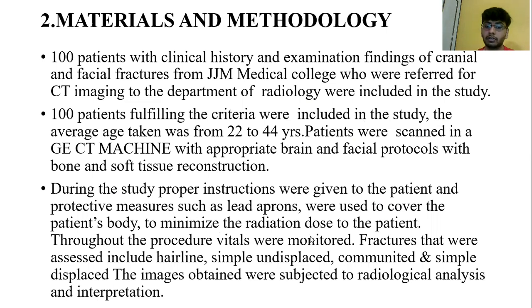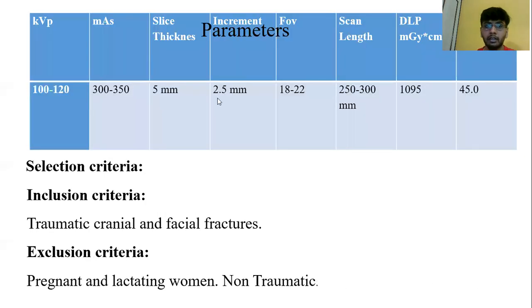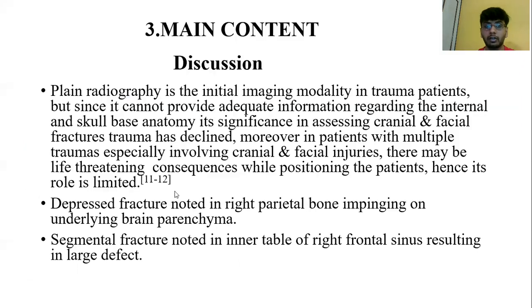Throughout the procedure, vitals were monitored. Fracture types assessed included linear, simple, and displaced combined fractures. Images obtained were subjected to radiologic analysis and interpretation. The scanning parameters were KVP 100–120, mAs 300–350, slice thickness 5 mm, field of view 18–22 cm, and scan length 250–300 mm. The inclusion criteria were traumatic cranial and facial fractures. Pregnant, lactating women, and non-traumatic patients were excluded from the study.